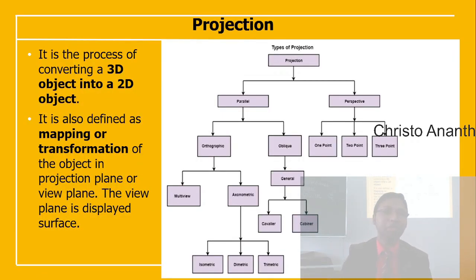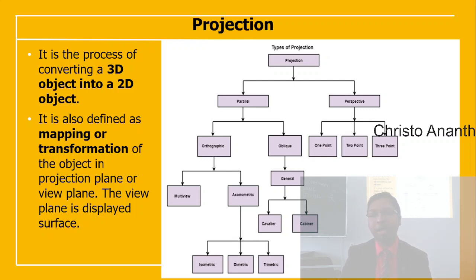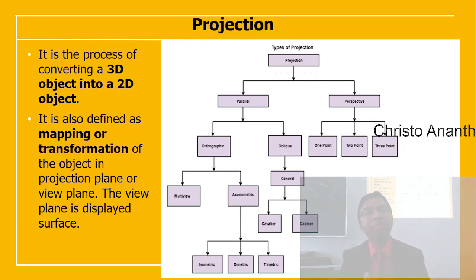Projection is the process of converting a 3D object into a 2D object. You can also define it as mapping or transformation of the object onto the projection plane, also called the view plane. The view plane is the displayed surface.